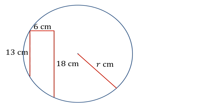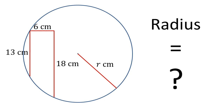In this question we're given a circle. On the left-hand side of the circle is a 13 centimetre long chord. From the top of the chord is a 6 centimetre horizontal line, and then coming down from that is a vertical line of 18 centimetres which touches the circle again at the bottom. Using just this information, we need to work out what the radius of the circle is.